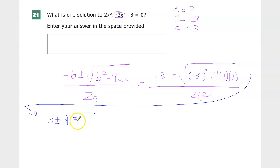Negative 3 squared is 9. 4 times 2 times 3: 4 times 2 is 8, 8 times 3 is 24. Now 9 minus 24 is negative 15 so I end up with 3 plus or minus the square root of negative 15 over 4.